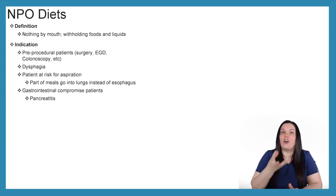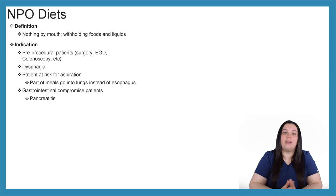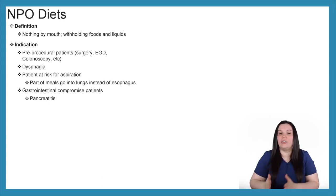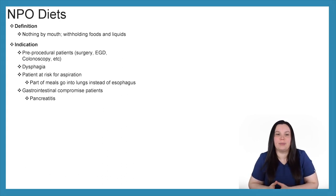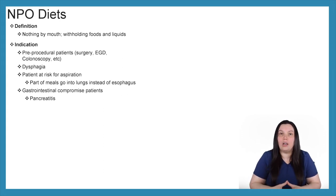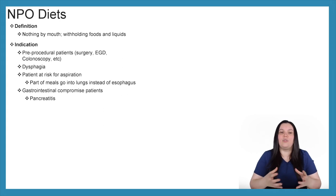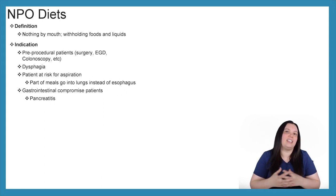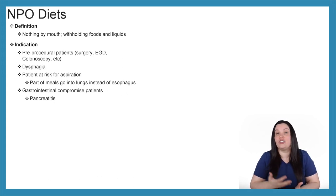If they are having issues swallowing, they would be on an NPO diet. If the patient is at an increased risk of aspiration — that means part of their meals or their liquid is going to go into their lungs instead of their esophagus — or if there is some kind of gastrointestinal compromise such as pancreatitis.